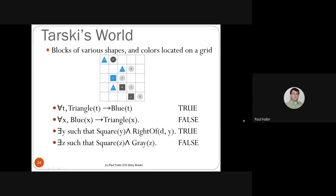Writing logical formulas over Tarski's World: 'for all T in geometric objects, triangle(T) implies blue(T).' This is a conjunction of implications for all geometric objects — if the object is a triangle, it's blue. The triangles are A, C, and G. Are A, C, and G all blue? Yes — so this universal conditional statement is true.